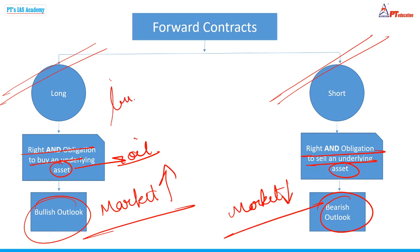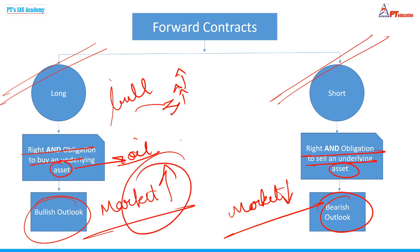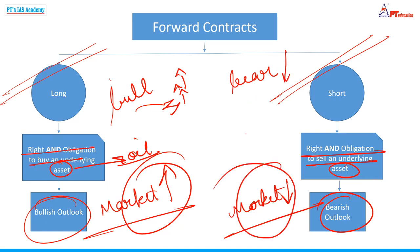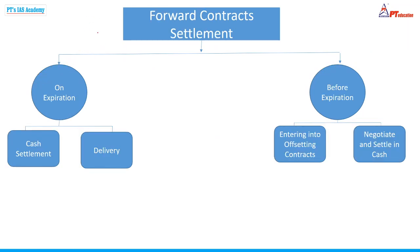Now, why do we say bullish and bearish? Bullish is because when a bull attacks, it tosses the opponent upward with its horns — you can see this on National Geographic. So in finance, the word 'bullish' is used in reference to this, meaning the market will go up. For bearish: a bear attacks by striking downward with its paw, trying to bring the opponent down. So when markets are expected to fall or when markets fall, the term 'bearish' is used.